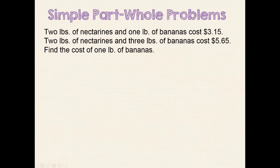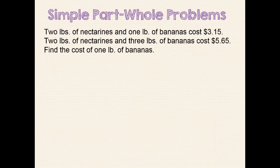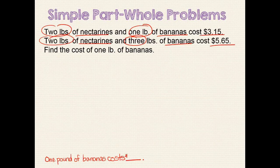Here's another part-whole problem. Two pounds of nectarines and one pound of bananas cost $3.15. Two pounds of nectarines and three pounds of bananas cost $5.65. Find the cost of one pound of bananas. Our problem statement can be: one pound of bananas costs blank dollars. When rereading the problem, we identify the important information and start our model drawing with what we know. We are first told that two pounds of nectarines and one pound of bananas cost $3.15, and we can show that in a unit bar. Next, we are told that two pounds of nectarines and three pounds of bananas cost $5.65, so we drop down and show that underneath our first unit bar.